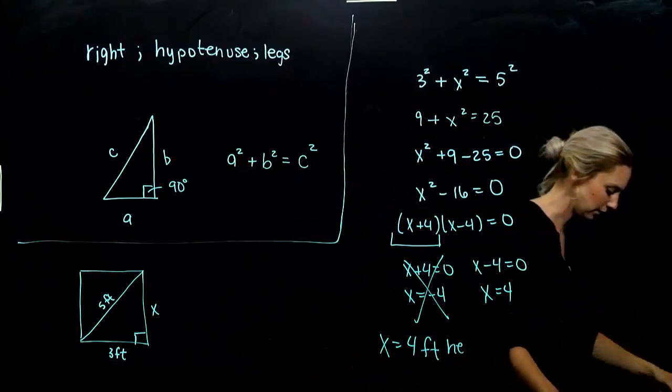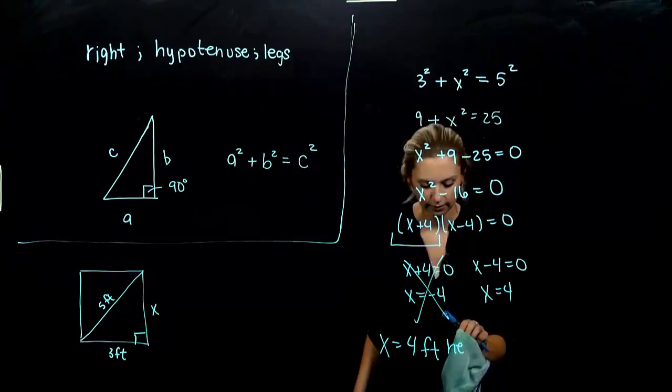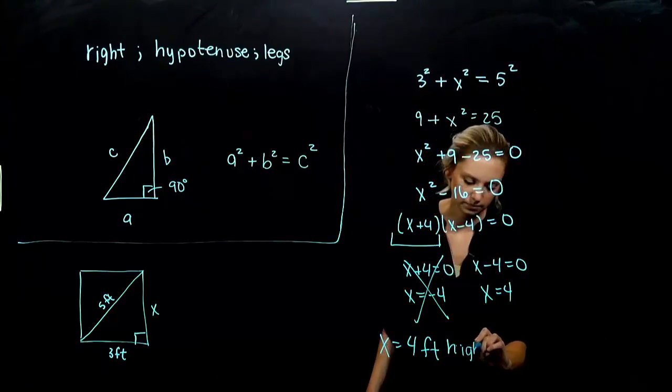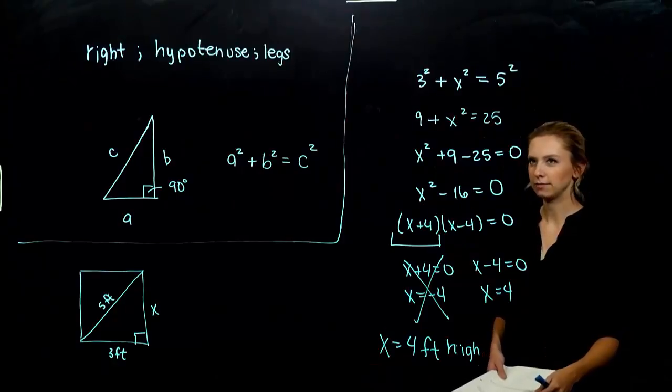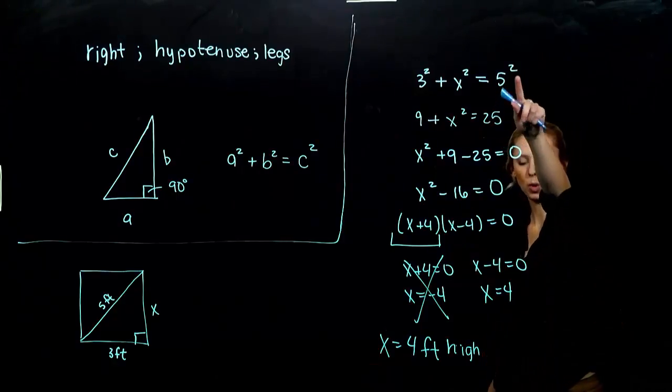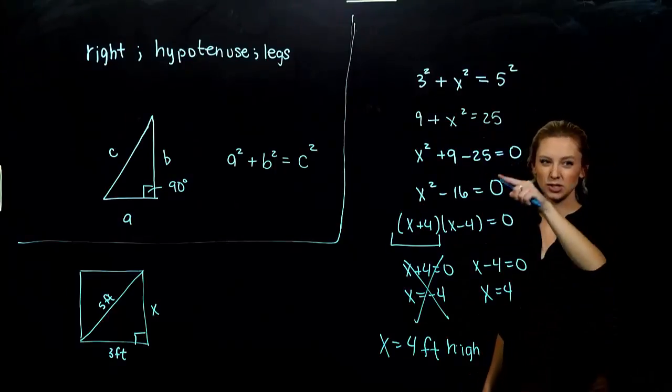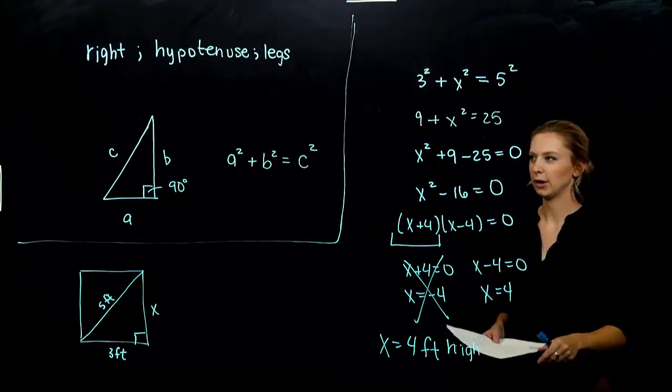Four feet high. How can we check these? I can always plug it back in, check and make sure that this relationship holds when I actually plug in four. We still need to satisfy that Pythagorean relationship. Last problem of this section.